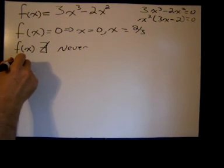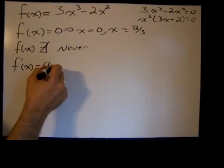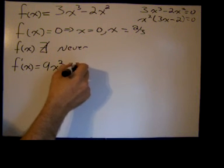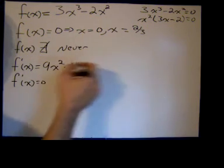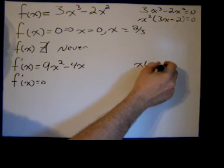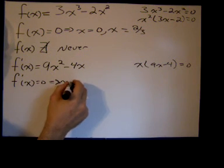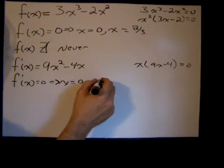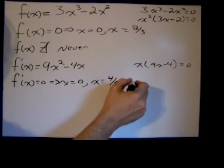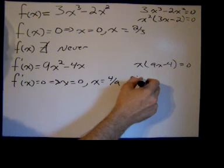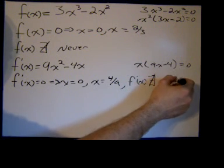So now we'll go on to the first derivative, and hopefully I can get this all on one page. The first derivative is 3 times 3, bringing the power down in front, so 9x² - 4x. f'(x) = 0. Again, same process as before, actually even a little simpler. We have x(9x - 4) = 0, which implies that x = 0 and x = 4/9. And again, f'(x) is undefined or does not exist? It's never undefined—the derivative is a polynomial.